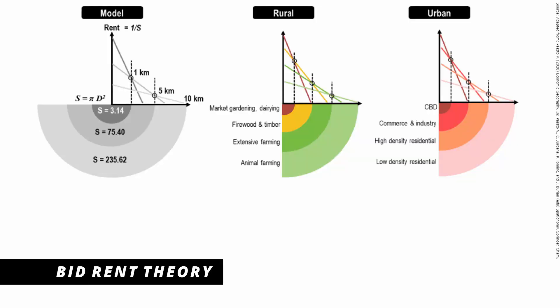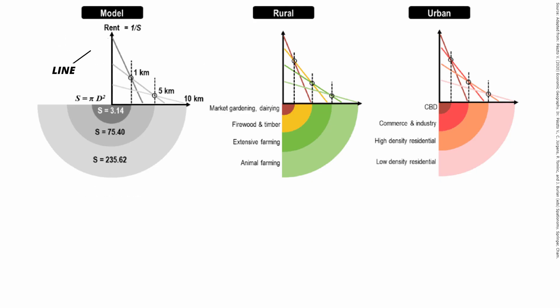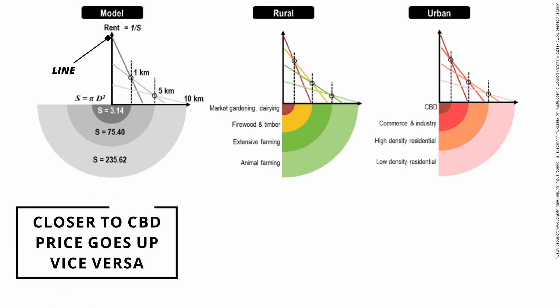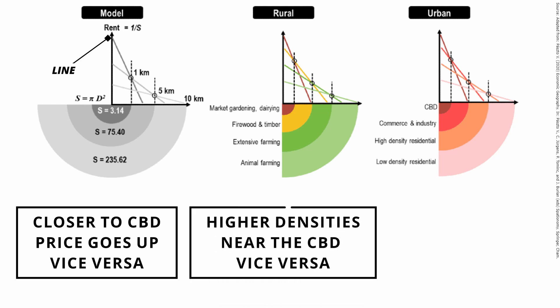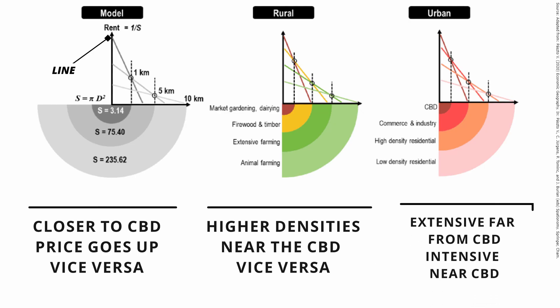Which brings us to the bid-rent theory, a theory that takes into consideration the price of the land and the distance relative to the CBD. If you're closer to the CBD, land costs will increase, and as you move further out, the land costs will decrease. Because land is so expensive near the CBD, you'll have higher densities close in and lower densities away from it. This means you're more likely to see extensive agriculture further away and intensive agriculture closer to the CBD.